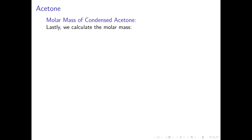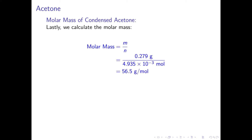Lastly, we can calculate the molar mass of acetone. The molar mass is defined as the mass of the liquid divided by the corresponding number of moles, or M over N. For our example, this is 0.279 grams divided by 4.935 × 10⁻³ moles, which gives a molar mass of 56.5 grams per mole.